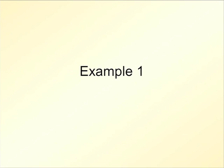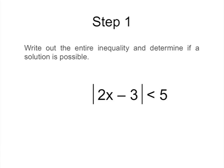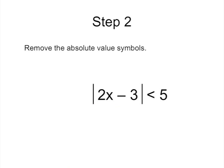So let's begin with the first example. The first step is to write out the entire inequality and determine if a solution is possible. In this case it is possible because a positive number can definitely be less than the value of 5. Next, and this is the real secret to solving absolute value problems, is to rewrite the inequality over again but without the absolute value symbols.